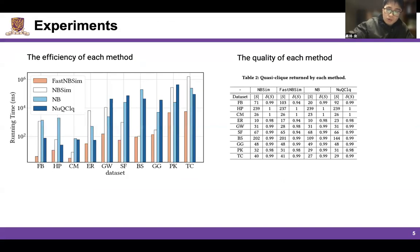We test our two algorithms on 10 real datasets and find that FastNBSim is up to 3 orders of magnitude faster than other compared algorithms while ensuring high-quality quasi-clique extraction.